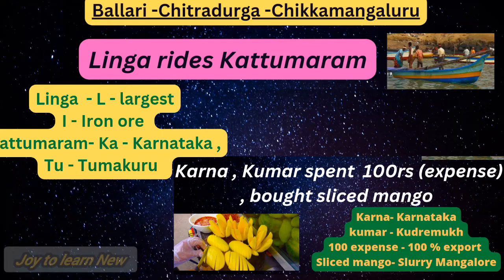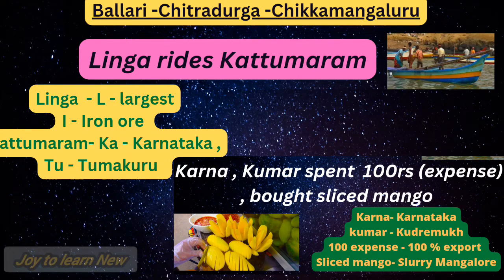Next sentence: 'Karna and Kumar spent 100 rupees expense and bought sliced mango.' Karna means Karnataka; Kumar — Ku stands for Kudremukh. '100 expense' means 100 percent export — Kudremukh mines in Karnataka have 100 percent export. 'Sliced' means slurry, and 'mango' means Mangaluru — the ore is transported as slurry through a pipeline to a port near Mangaluru.